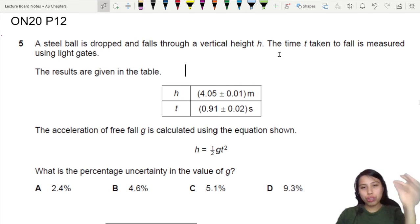In this experiment, a steel ball is dropped and falls through vertical height h. The time taken to fall is measured using light gates. So you're making two measurements. Your results are in this table and you notice how for each measurement there is an uncertainty. It's normal for experiments. The acceleration for free fall is calculated with this equation shown.